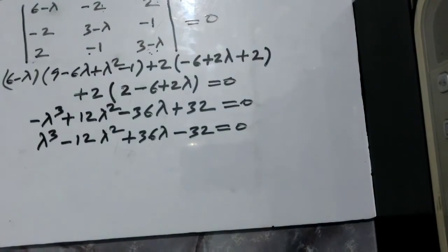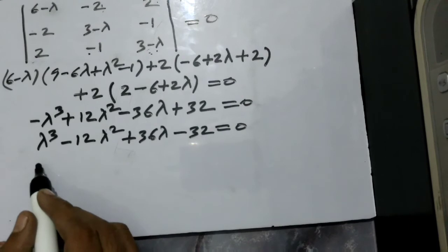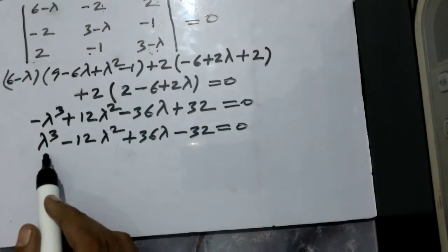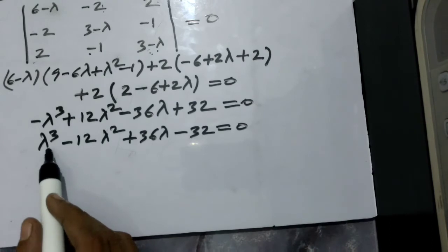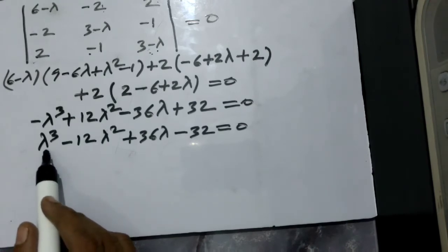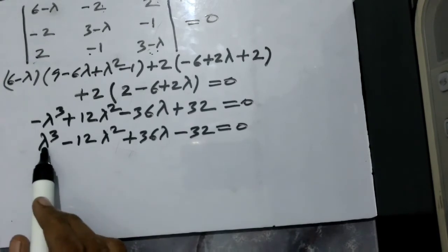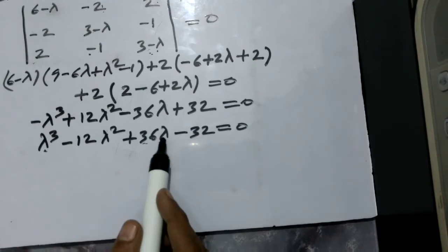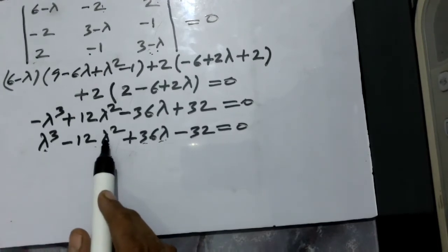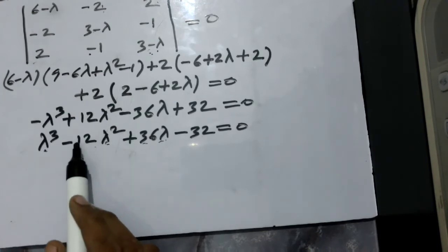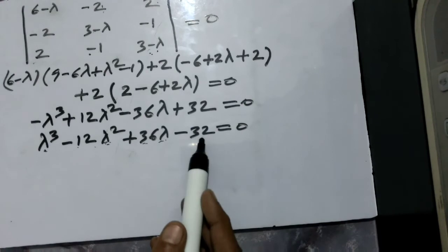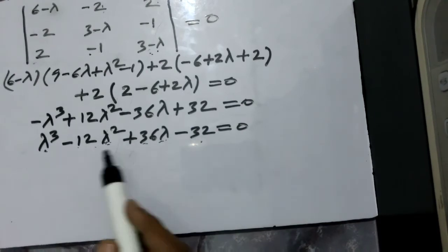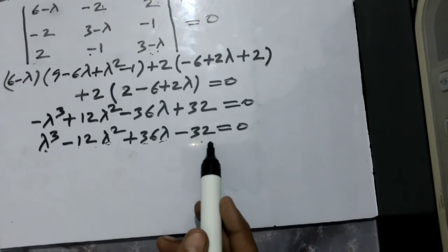We need to factorize this cubic equation. First, we find one root by the hit and trial method. We can see that lambda equals 2 satisfies the equation: 2 cubed is 8, 36 times 2 is 72, giving 8 plus 72 equals 80; and 12 times 4 is 48, so 48 plus 32 equals 80. Thus plus 80 minus 80 equals zero, confirming lambda equals 2 satisfies the equation.